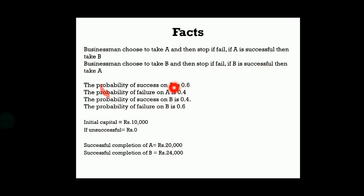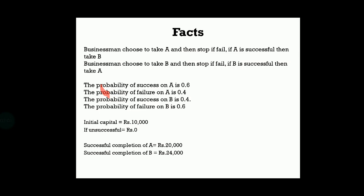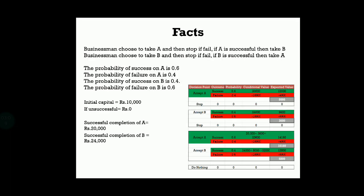The probability of success of A is given. The probability of failure of A is also given. The probability of success of B is 0.4 and the probability of failure of B is 0.6. The initial capital available is rupees 10,000, and if it fails, you will get 0. Successful completion of A will return 20,000 and successful completion of B will return 24,000. These are the basic facts available to us. Now with this, we will calculate the EMV.